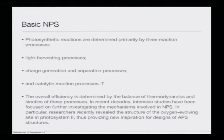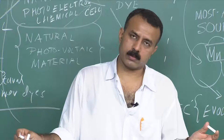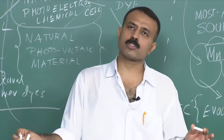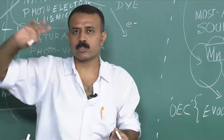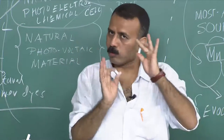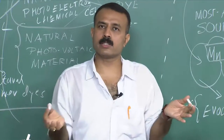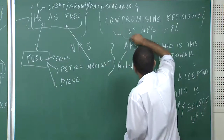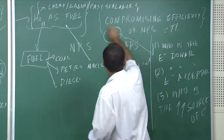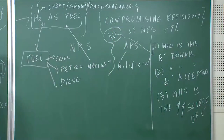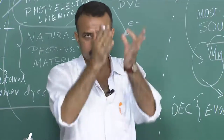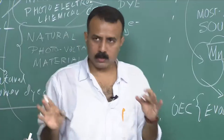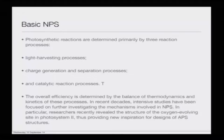What are the basics of natural photosynthesis? Photosynthetic reactions are determined primarily by three processes. If you remember, there is a light harvesting process — the chlorophyll P680 and P700, essentially photosystem 2 and photosystem 1 respectively, which are supported by a series of molecules funneling the light and ejecting the electron. Light energy is the driver; the energy provided by the sun is funneled through the antenna pigment to the light harvesting process. Second, there is the charge generation and separation process.